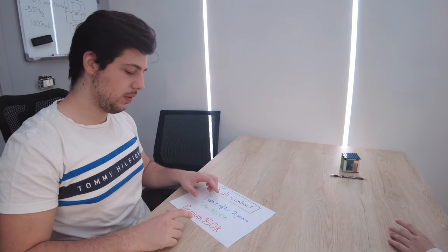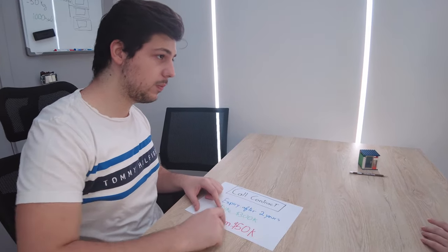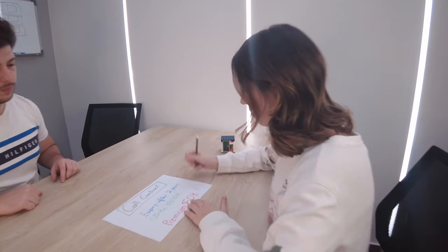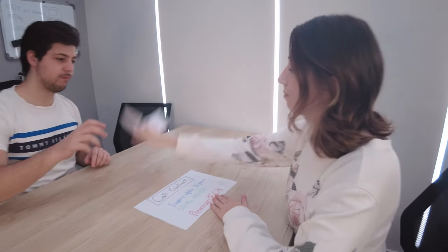In the options world, $300,000 is the strike price and two years is the expiration date. Since the home's price can go up and down, it doesn't make sense to give her the contract for free, so I'll sell this contract for $50,000 — this $50k is the option premium. She agreed, so at this point I got paid $50,000 and she owns the contract. In other words, I'm the option seller and she's the option buyer.